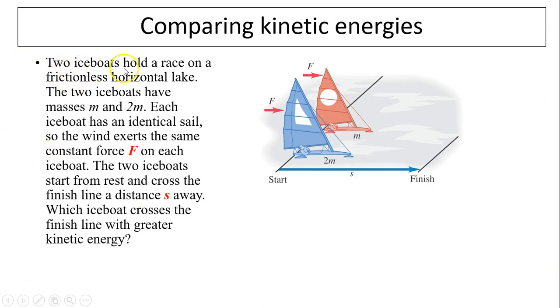Let's compare these two. Two ice boats hold a race on a frictionless horizontal lake. Two ice boats have mass m and 2m. Each ice boat has identical sails so that they exert the same force on each ice boat. Two ice boats start from rest and cross the finishing line a distance s away, so they have the same distance.